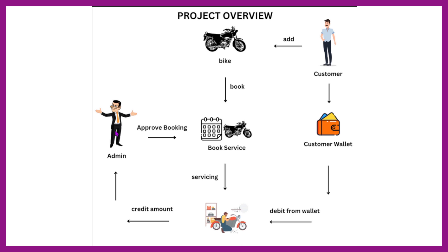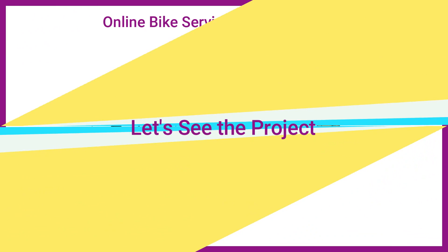Based on time availability, the admin can approve or cancel the booking. If the admin approves the booking, the customer will be able to see the updated booking status. The customer then visits the servicing center on the booking date. After servicing, the admin updates the servicing fee and servicing status. When the admin clicks the update button, the servicing fee is debited from the customer's wallet and both the booking and servicing status get updated.